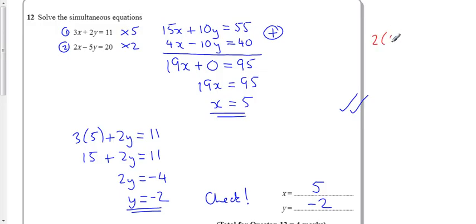So, I want to do 2 lots of 5, take away 5 lots of minus 2. And I want to be getting the answer 20, so we'll see. 2 lots of 5 is 10, minus 5 times minus 2 is minus 10. So, that's really 10 plus 10. That does equal 20.